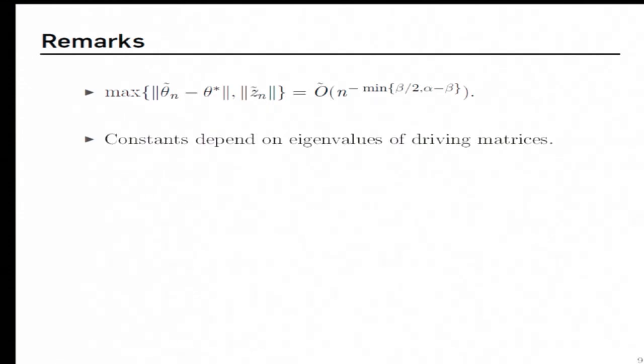Okay, let me conclude by giving some remarks on our result. Okay, so here is, I mean I've just copied our convergence rate from the previous slide. Okay, so the first question is what happens to the eigenvalues of the driving matrices. Well, they are not present in the convergence rate but they are present in the constants that are hidden over here. One can then ask what would be the optimal convergence rate of a two times scale algorithm. Well, from the estimate that we have and by setting these two terms to be the same, one can see that the optimal convergence rate that we obtain is N to the power minus alpha over 3.